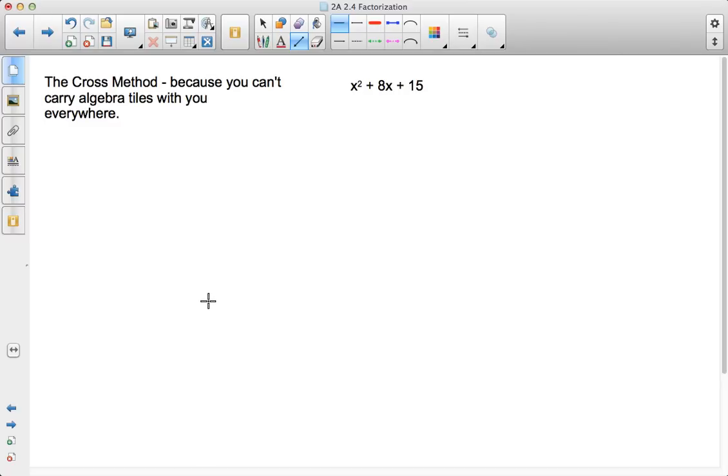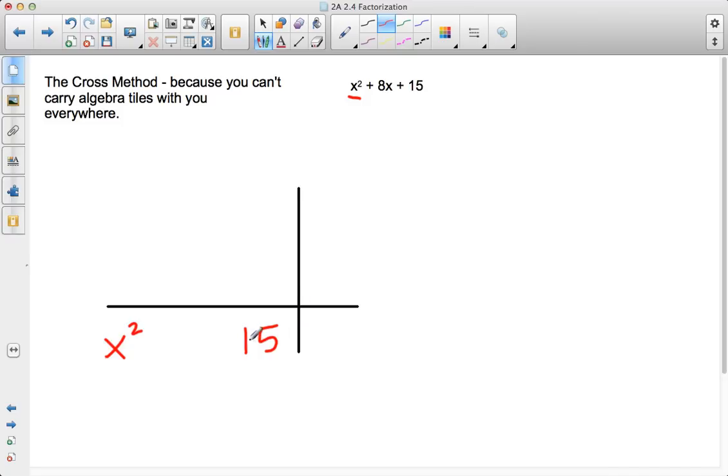Here is how the cross method works. First thing I'm going to do is go ahead and set up a cross. So we'll set up a line here, and a line there. Now, the first thing I'm going to do is go ahead and write down x², and my constant term 15 on the left-hand side of this cross over here.